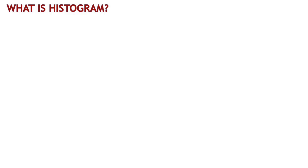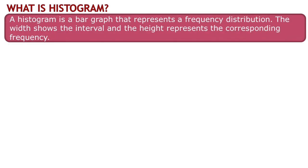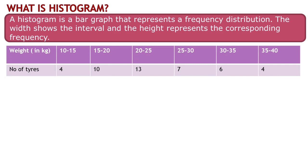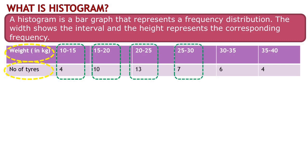So, what exactly is a histogram? Imagine a bar graph that showcases the frequency of different values within specific intervals — that's a histogram. Let's take a practical example to understand it better. Consider a dataset of tire weights. We have different weight intervals and for each interval, we have the corresponding frequency of tires. For instance, we have 4 tires in a weight range of 10 to 15, 10 tires in the range of 15 to 20, 13 tires in the range of 20 to 25, 7 tires in the range of 25 to 30, 6 tires in the range of 30 to 35, and 4 tires in the range of 35 to 40.